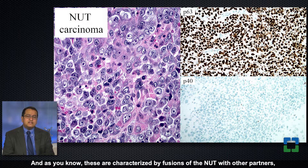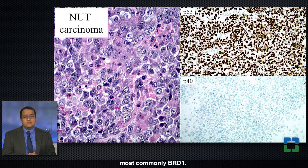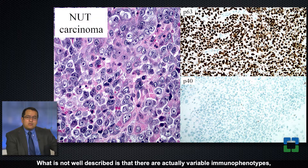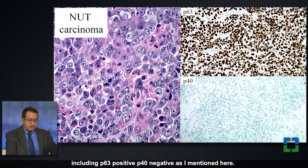NUT carcinomas are characterized by fusions of NUT with other partners, most commonly BRD4, so the BRD4-NUT fusion is one of the most characteristic fusions. What is not well described is that there are actually variable immunophenotypes, including p63 positive and p40 negative, as I mentioned.